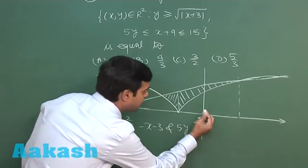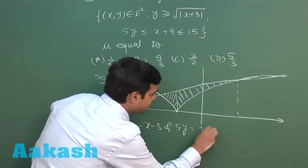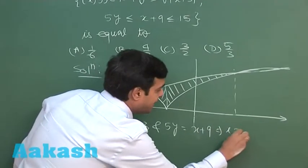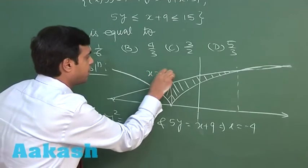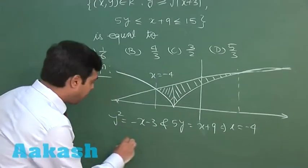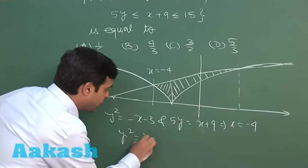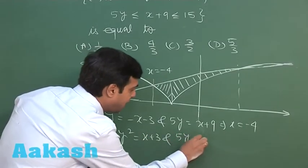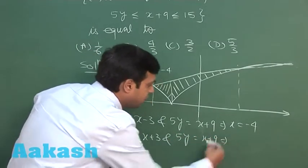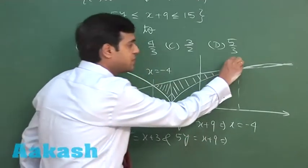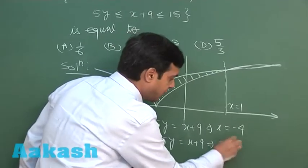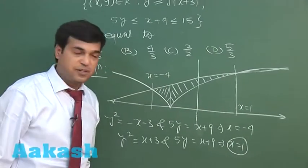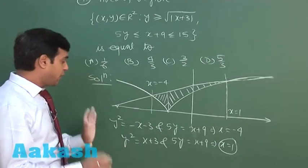And 5y equals x plus 9, we get x equals minus 4 at this point. Solving y squared equals x plus 3 and 5y equals x plus 9, we find two points out of which just the requirement is fulfilled at x equals 1. One point is required for me, so the required area finally...